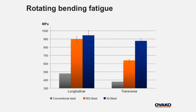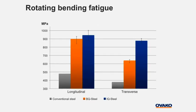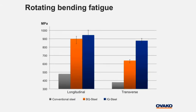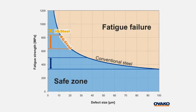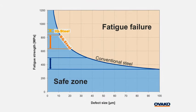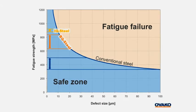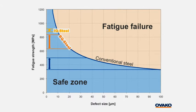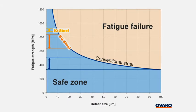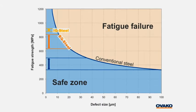Based on the results from this fatigue test, the fatigue strength versus defect size graph can be further discussed. If you take the expected fatigue strength in the least and the most favorable loading direction, this could be how it would look for a conventional steel, a BQ steel, and an IQ steel. As shown in the figure, the fatigue strength of the IQ steel will be very high and with a very low spread.